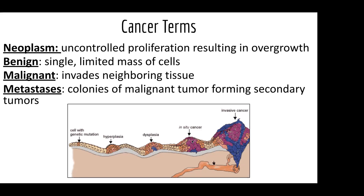When you have enough genetic diversity and enough invasion, we have what's called in situ cancer — meaning it stays in its location. After that you get invasive cancer, which means it's starting to create roots and spread to multiple layers of that tissue system and cause problems.